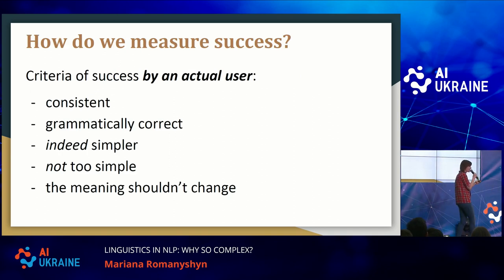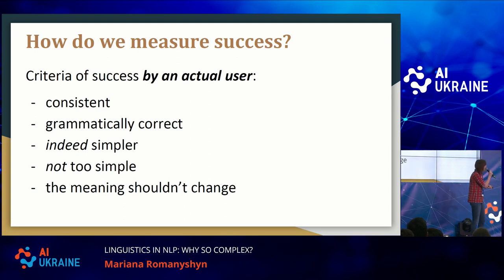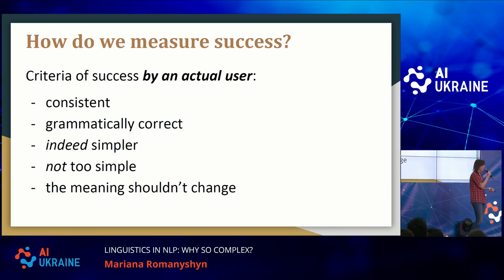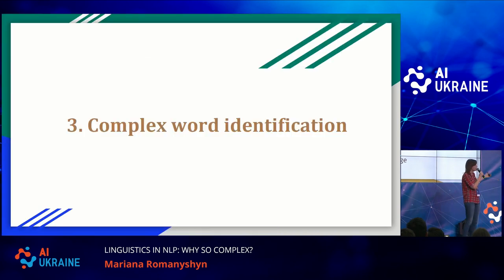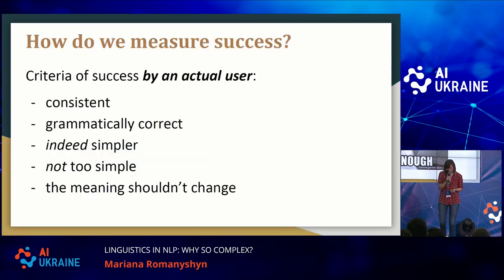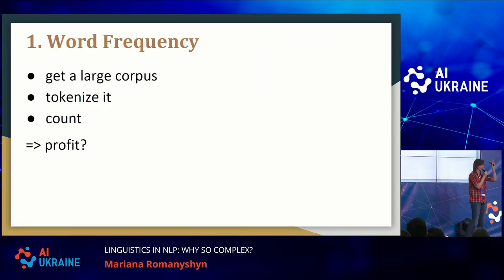When you ask a user, a user wants the system to simplify words consistently, for the simplified text to be grammatically correct, for the text to be indeed simpler and not just having a synonym replaced, and not too simple either, because that can influence the meaning — and the meaning shouldn't change. So the regular user will tell you: not good enough. Let's look more closely at our complex word identification module and complex word simplification module and see how we can meet these requirements.